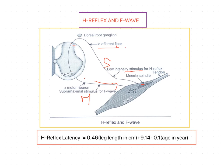The H-reflex is a function of age and leg length, which can be determined according to this equation: H-reflex latency equals 0.46 times leg length in centimeters, plus 9.14, plus 0.1 times age in years. This is how we can calculate the H-reflex latency period.